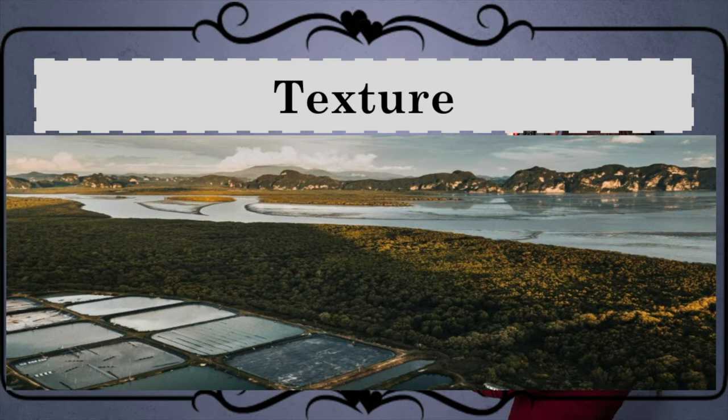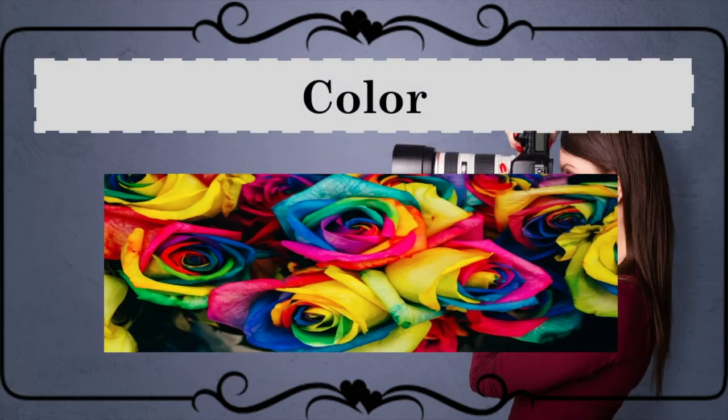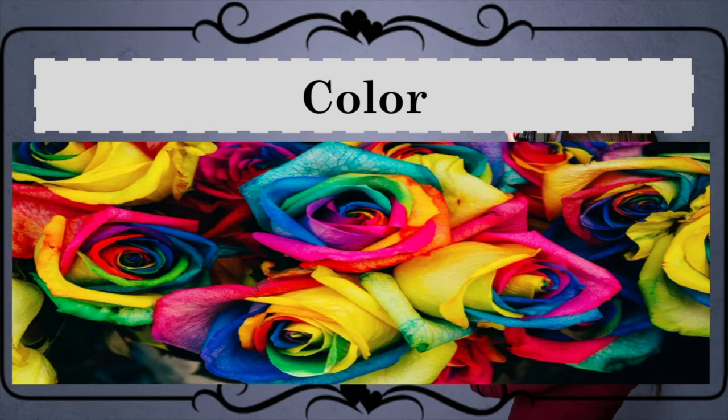Next, texture. Texture represents the details that are on the surface of the subject. Using texture, the backdrops can create an image that looks more alive and exciting. Next, color. Color gives life to some photos and has a major role in setting the mood of an image.